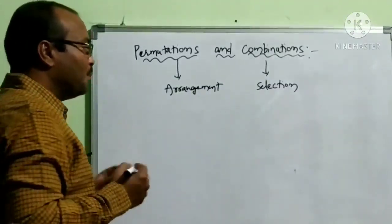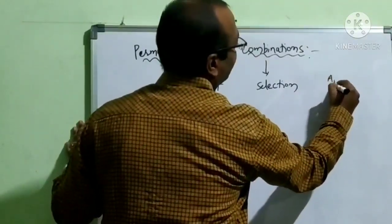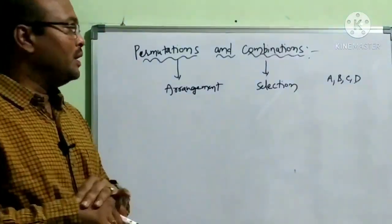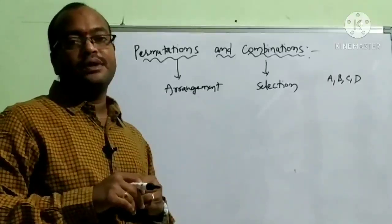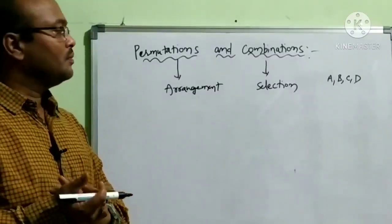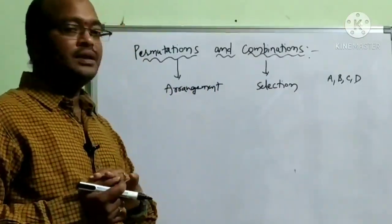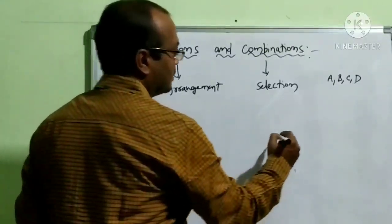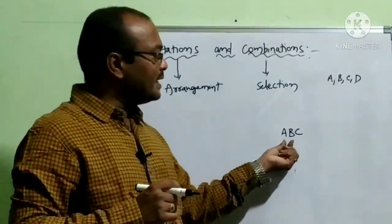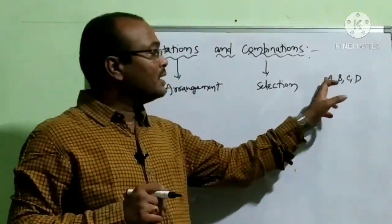Suppose we have four letters: A, B, C, D. How do we use these 4 letters? We form 3-letter words. For example, A, B, C is one such 3-letter word formed from the 4 letters.